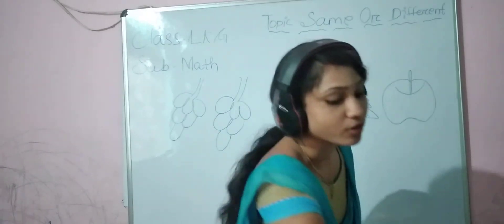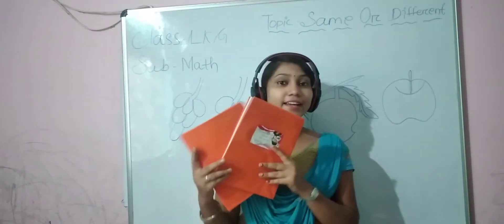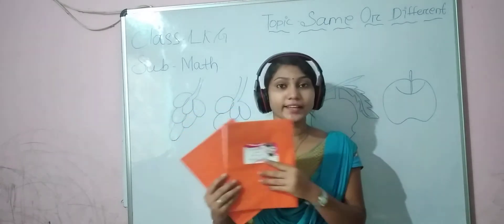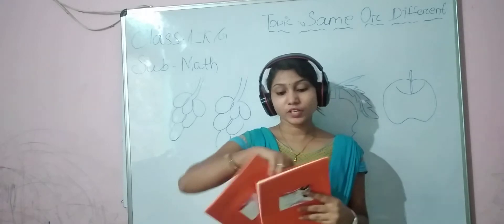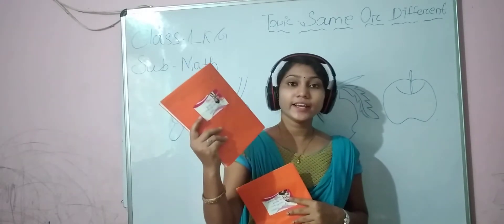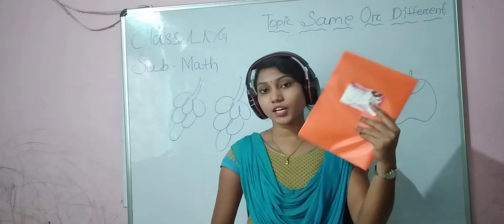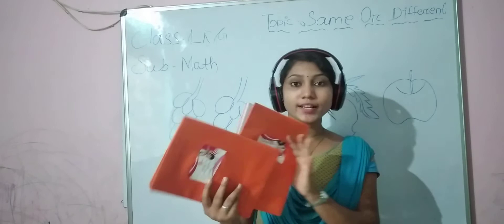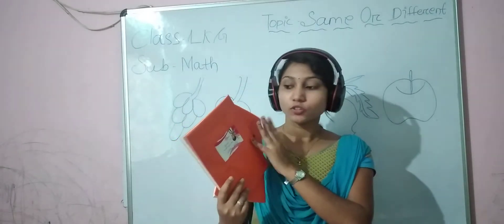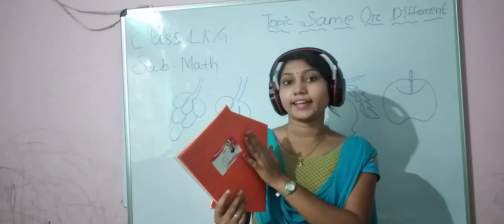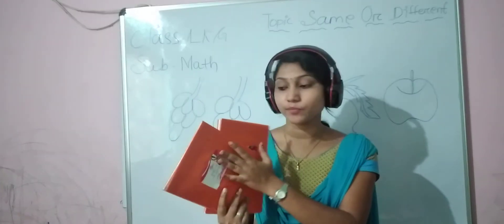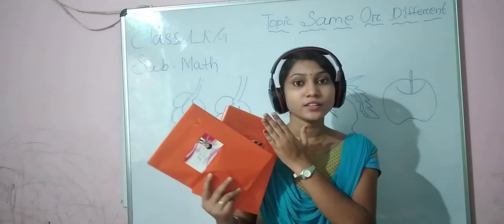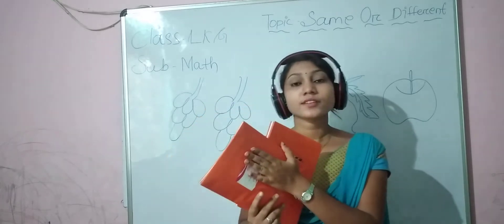Look at this example. What is this? Children, what is this? This is your notebook. What color is it? Orange color. And this one? Also orange color. Both are the same color, so these are the same.